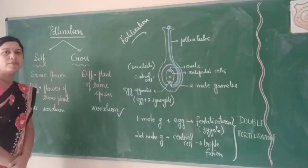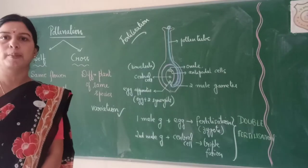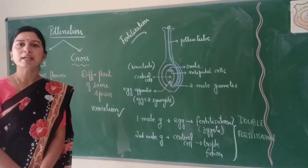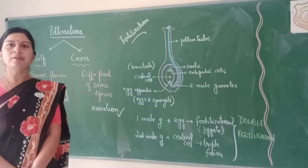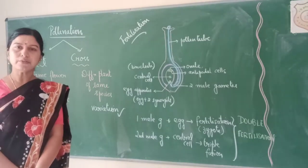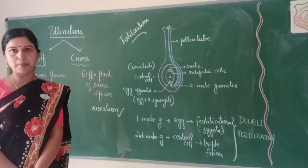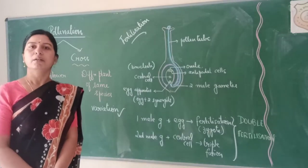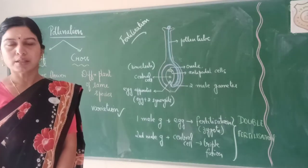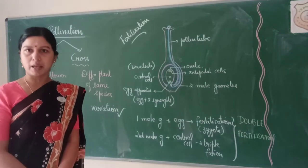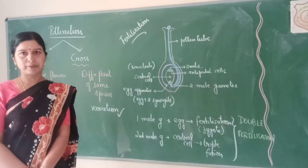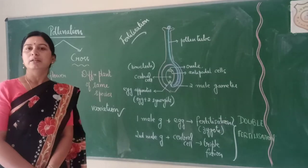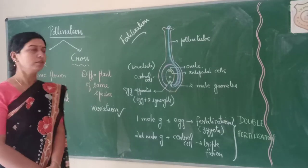How can we define pollination? Pollination can be defined as the transfer of pollen grains from anther to stigma. Now, the question is whether pollen grains are transferred to the stigma of the same flower or of a different flower. So let us see the types of pollination.